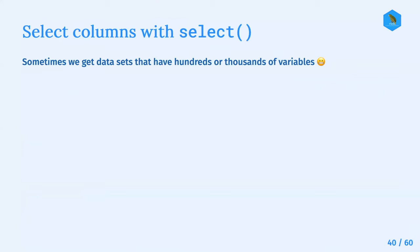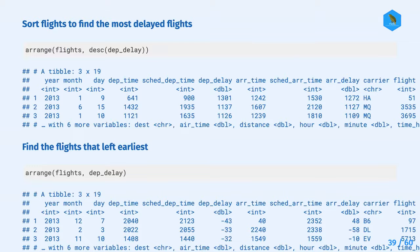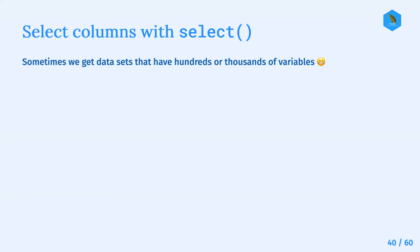The next section is selecting columns with the select function. Sometimes we have datasets with hundreds or thousands of variables, which can be hard to manage. You might want to narrow down to the ones most relevant to the questions you're looking to answer. This dataset only has about 19 variables, but there are definitely situations where you'd be handling hundreds or thousands and would want a more manageable data frame.